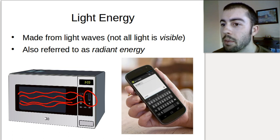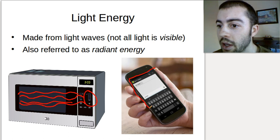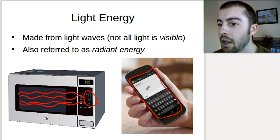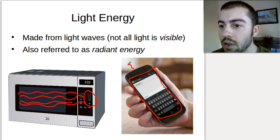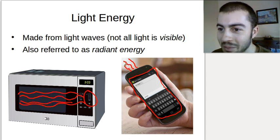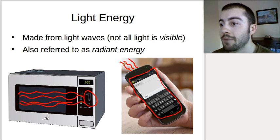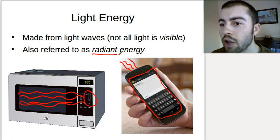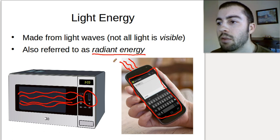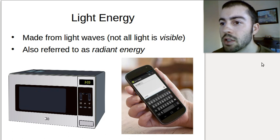Cell phones are another example. There are two ways light energy is used in your cell phone. Your screen uses visible light energy — we can see it. But there's also light energy being used when your phone communicates with another phone. If you send a text, you can't see little beams shooting through the air, but that is still a form of light energy — just not visible to the human eye. You may also see the term radiant energy in your book; radiant energy and light energy are really the same thing.